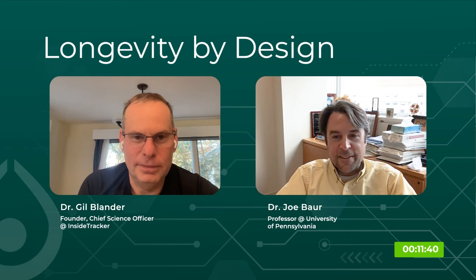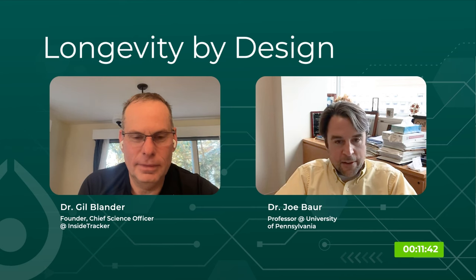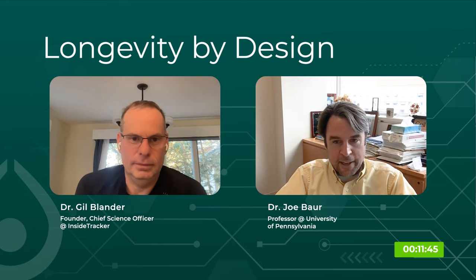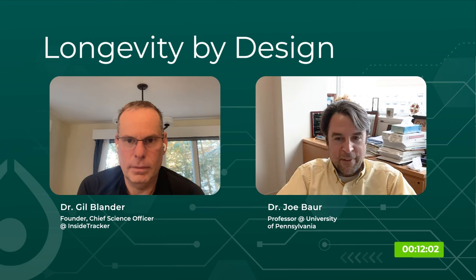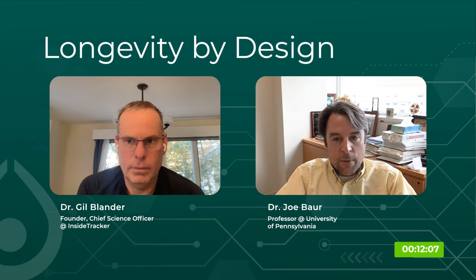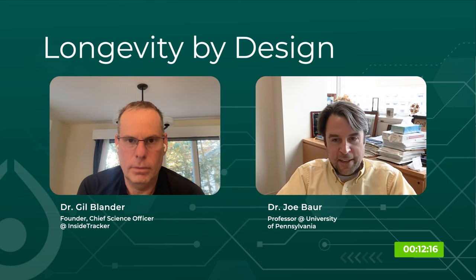ATP is adenosine triphosphate — the energy currency of cells. Most of the things taking place in our body that require energy do it by cleaving ATP as a coupled reaction. Whatever energetically unfavorable process you want to happen is done in a way that catalytically uses a molecule of ATP, using the energy from breaking that molecule to fuel the event you're trying to trigger. NAD is required for every sustainable path to generate ATP, and if you can't generate ATP, that's the end of the line for the cell — you need it to keep the cell alive.